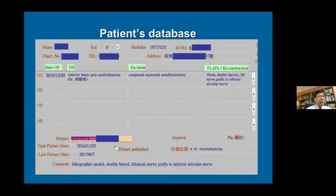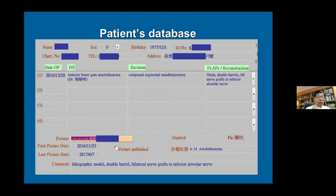Intraoperative pictures are very important — later on, when you need to reflect or figure out how to improve technique, they are very useful. This is our patient database, recorded routinely for every single case: operative date, diagnosis, excision, reconstruction, flap category, and specific notes such as use of the stereolithographic model as double bellows and bilateral nerve graft to the inferior alveolar nerve. When we want to give a talk or publish, this information is very useful.